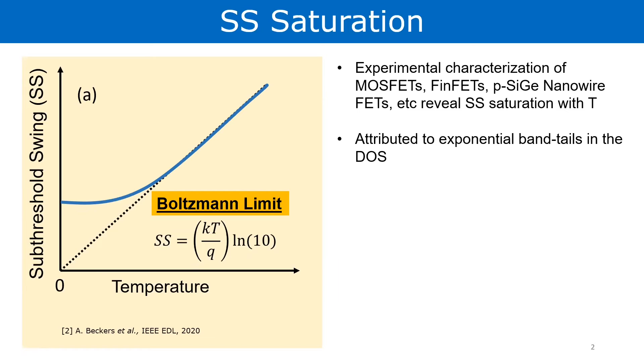Ideally, we were expecting the graph to follow the dotted line. However, we see a constant subthreshold swing for temperatures below about 100 Kelvin. This puzzled researchers for quite a bit and exposed the inadequate modeling which was sufficient for minus 40 to 150 degrees Celsius, but not in the entire temperature range.